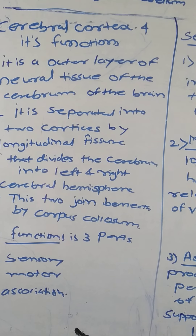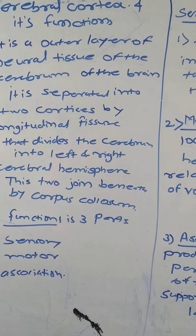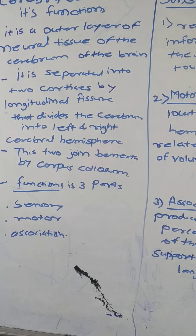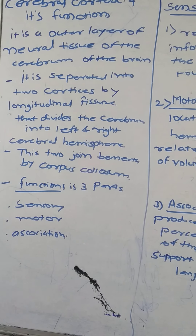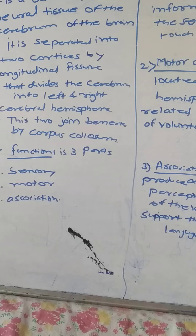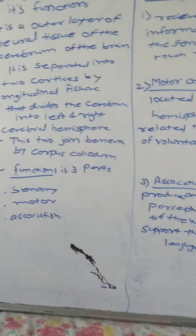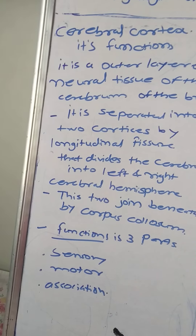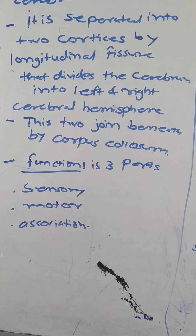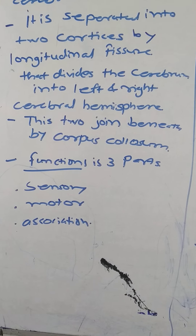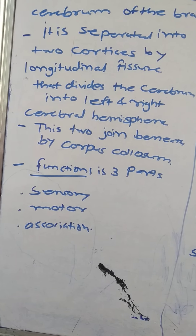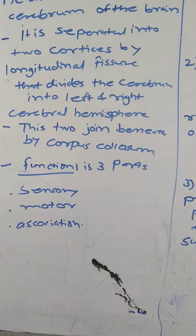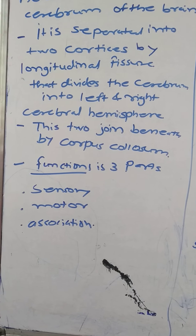The cerebral cortex is the outer layer of the neural tissue of the cerebrum in humans and other mammals. It is separated into two cortices by the longitudinal fissure that divides the cerebrum into left and right cerebral hemispheres. The two hemispheres are joined together beneath the cortex by the corpus callosum. The cerebral cortex is the largest site of neural integration in the central nervous system, playing a key role in attention, perception, awareness, thought, memory, language, and consciousness.